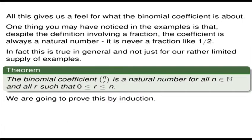In fact, this is true in general. So we have a theorem: the binomial coefficient n choose r is a natural number for all n in the natural numbers, and all r such that 0 is less than or equal to r, less than or equal to n. This is quite a complicated expression, but probably the most complicated you're going to see, so it's a good one to do.